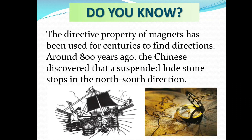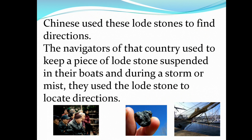Do you know, the directive property of magnets has been used for centuries to find direction. Around 800 years ago, the Chinese discovered that a suspended lodestone stops in the north-south direction. They used this directive property of magnets in ships for finding directions. Chinese navigators used to keep a piece of lodestone suspended in their boats, and during a storm or mist, they used the lodestone to locate directions.